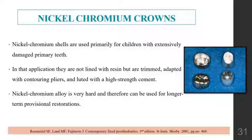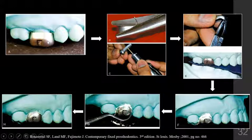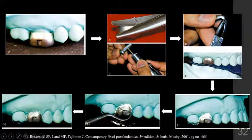Nickel chromium crowns do not need to be relined. They are trimmed, adapted, and contoured with pliers, and luted with cements. Nickel chromium alloys are very hard and are therefore used for long-term provisional restorations. The mesiodistal and occlusal-cervical height is measured, shells are trimmed with crown and collar scissors, sharp edges are polished with a green stone burr, and crimping and contouring pliers are used to contour the crown. Once the crown is properly adapted, cementation can be done.